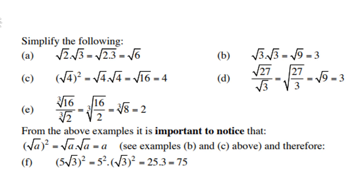Example (e): cube root of 16 over cube root of 2 can be written as cube root of 16 over 2, which is cube root of 8, which is 2. From the examples above, it's important to notice that the square root of a squared is basically a. For example (d): square root of 27 over square root of 3 is square root of 27 over 3, which is square root of 9, which is 3. Then (f): 5 times square root of 3, all squared — note 5 is outside the bracket — so it is 5 times 5, which is 25, and then square root of 3 times square root of 3 is 3, giving you 75.